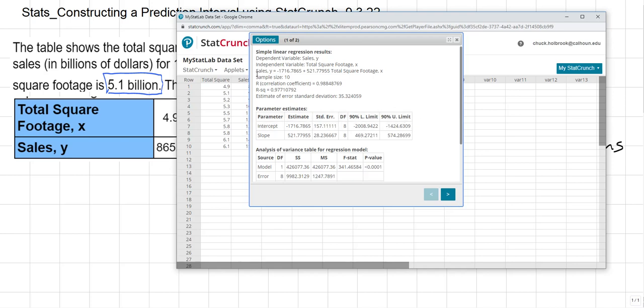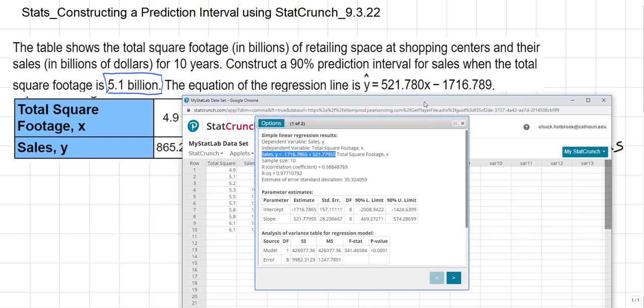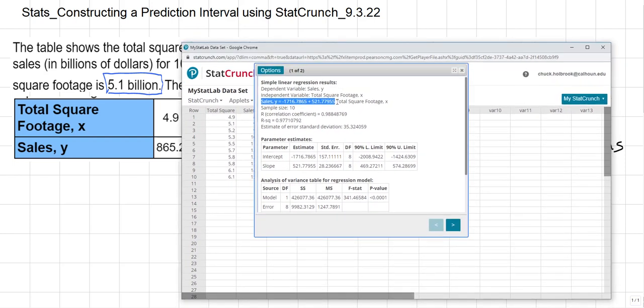And there's a lot to it. Notice that it's gone ahead and calculated what the linear regression line is, and that should match what's given in the problem. And, in fact, it does. It is written backwards from what is written in the problem. But you'll also notice that instead of having just an x, it has total square footage, comma, x, because that was the name of the column that we used.